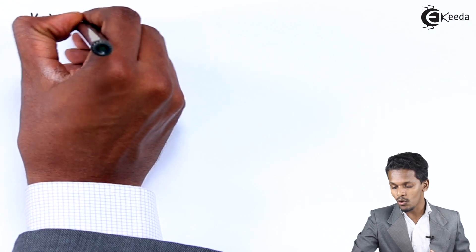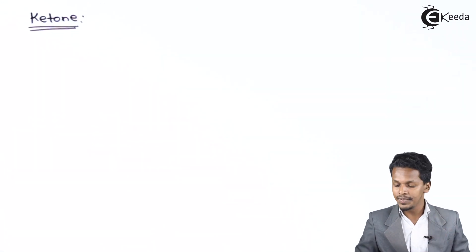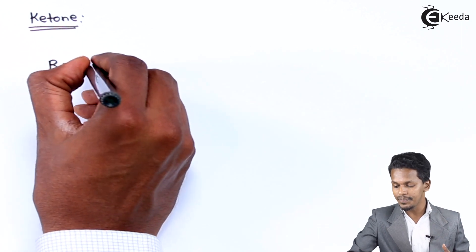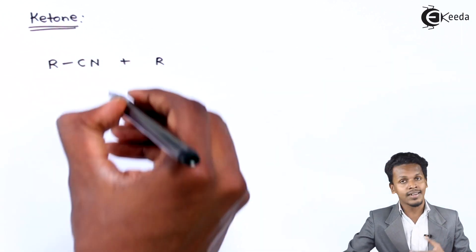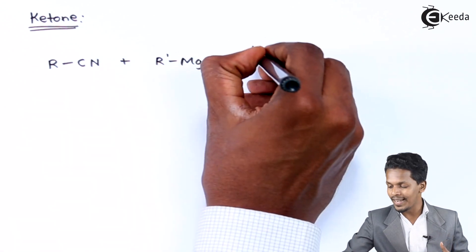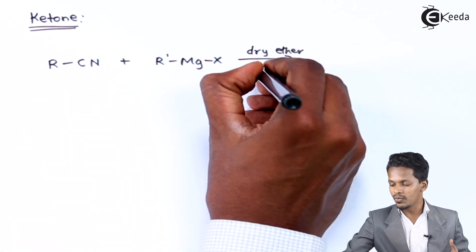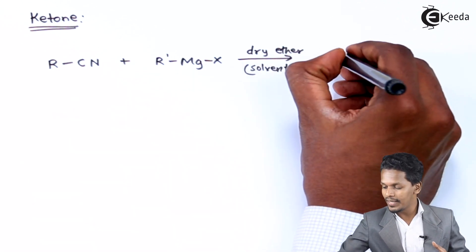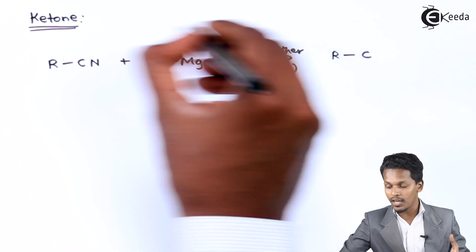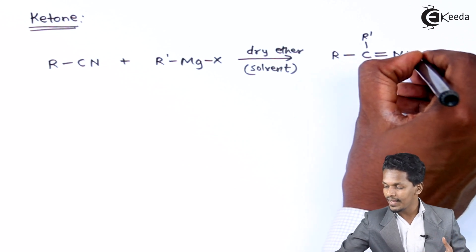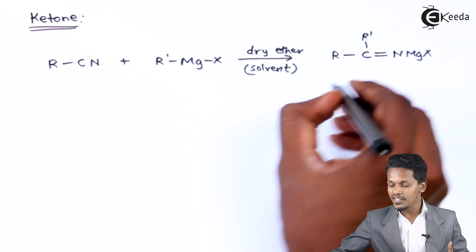Now we are going to discuss how we can prepare ketones using Grignard reagent. For that we use an alkyl cyanide. Suppose we consider R–CN reacting with the Grignard reagent R'–MgX in the presence of dry ether as solvent. The reaction is very similar to the previous one: the R' group attaches to the carbon giving R–C(=N–MgX)–R′ as the adduct, again known as an intermediate complex.